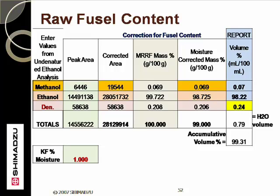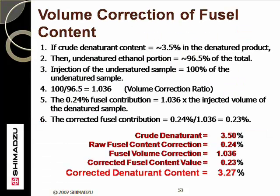Subtracting this value would give a corrected denaturant content, but there is one more tweak to this methodology. This tweak is quite minor and can be ignored without much consequence; however, it does show that you can get a more accurate value by applying the proper corrections. With the denatured ethanol containing about 3.5% denaturant, it also contains about 96.5% undenatured ethanol. Therefore, the 0.24% fusel contribution is based on 1.036 times the amount of undenatured ethanol that exists in the denatured sample. Correcting the 0.24% fusel contribution for the volume correction ratio gives a net 0.23% fusel content correction, and subtracting this from the original 3.5% gives a corrected denaturant content of 3.27%.